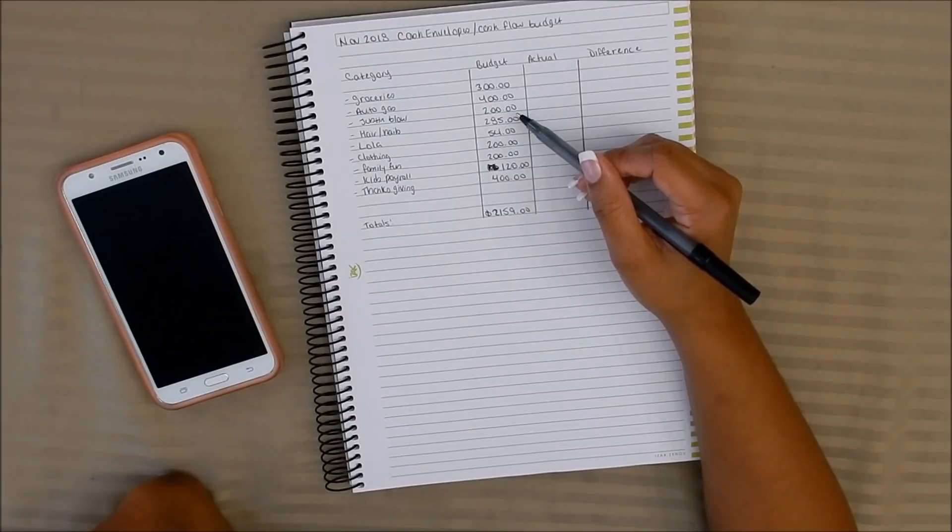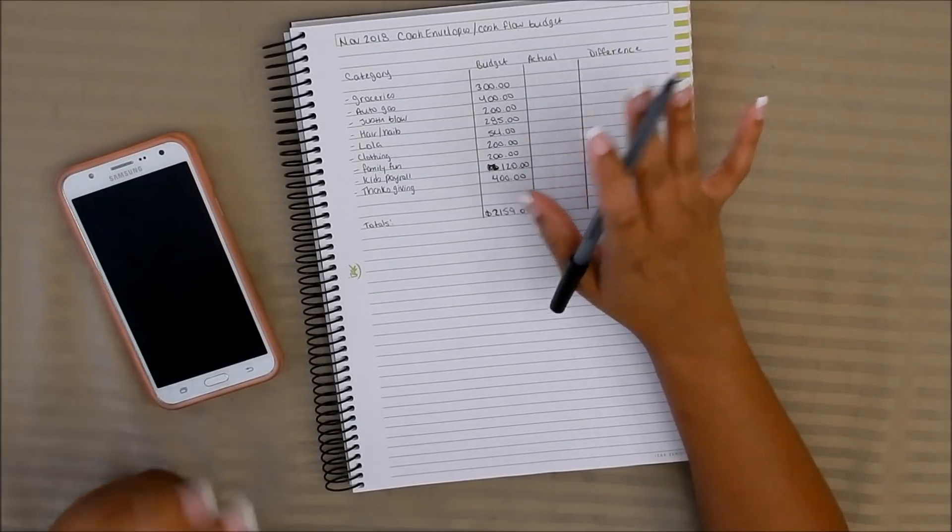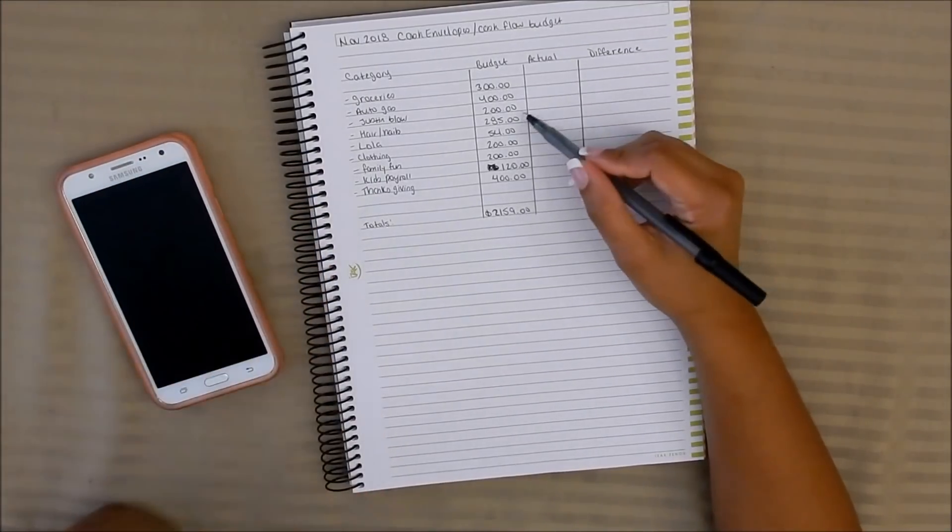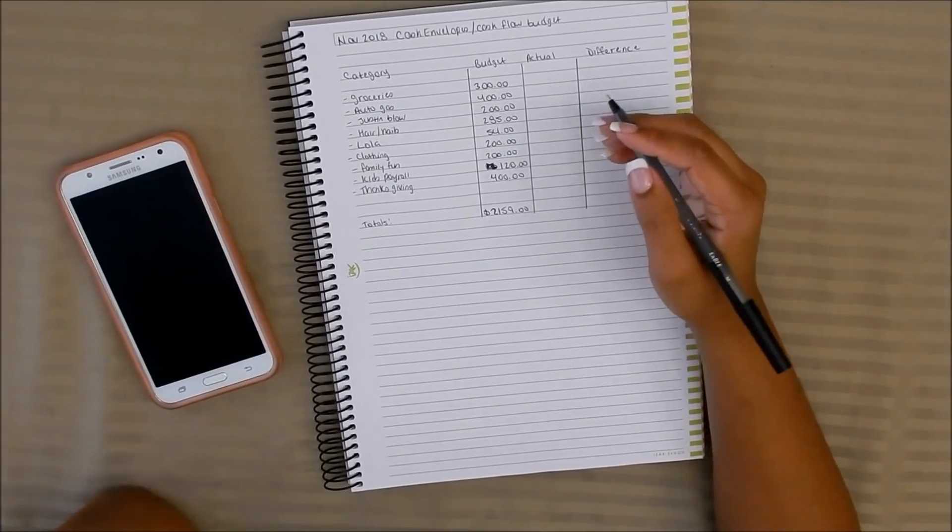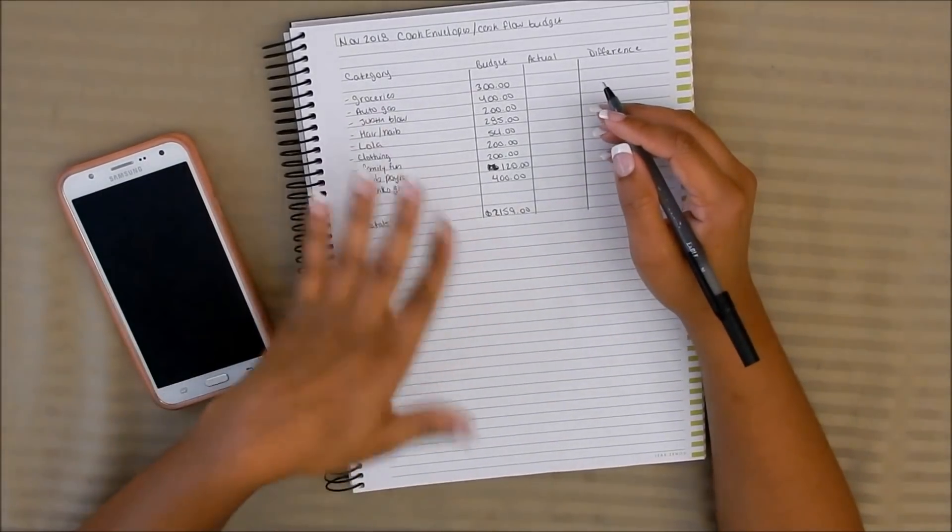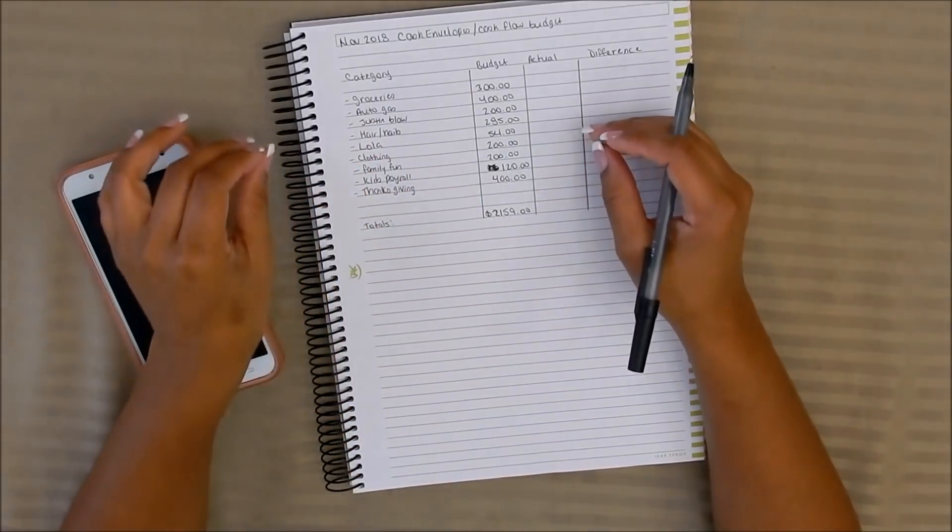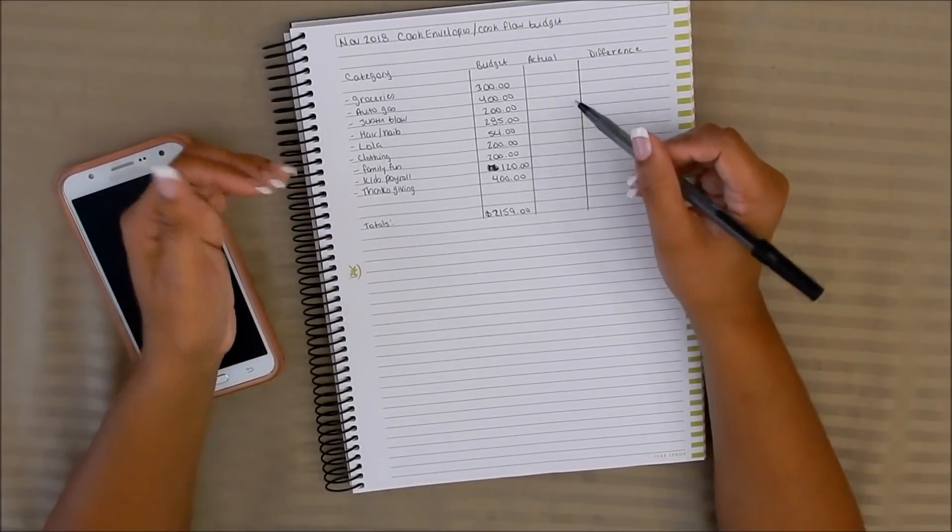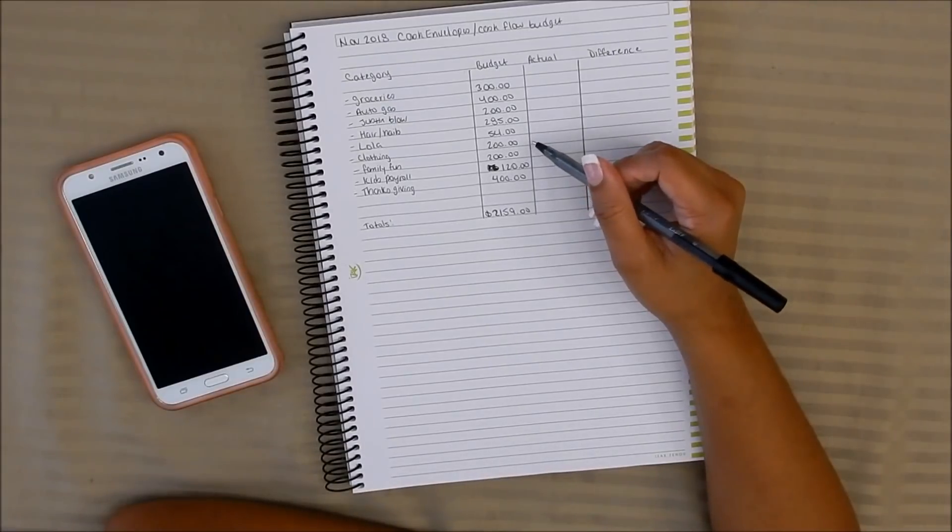Jada, she's on her whole natural kick so she's been doing her own hair and all that, but I will still budget that in. Per paycheck depending on where we're at, what's going on, and whether or not we need to add in, I will actually do a whole $285 for the month. Lola will be $54 for the month.